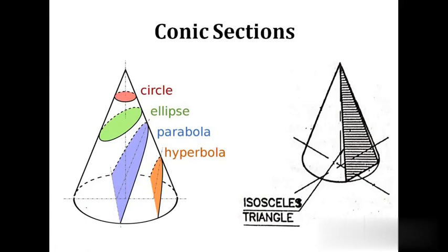Hi all. Welcome to the third lecture on the topic section of solids. In this lecture, first we will discuss conic sections. A conic section means the section of a cone. A right circular cone can be cut by section planes to obtain cut sections of different shapes. These cut sections seen on the cone are called conic sections. A conic section can be defined as a curve obtained by cutting a right circular cone with a section plane kept at different inclinations with the axis of the cone.